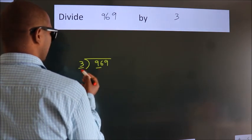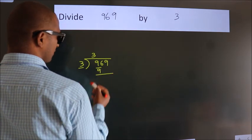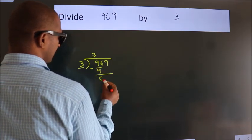In the 3 table, 3 threes are 9. Now we should subtract. We get 0.